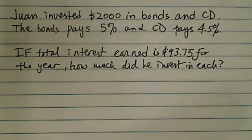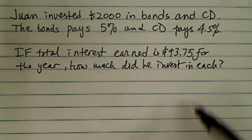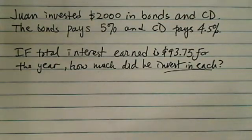Here's a word problem. This person invested $2,000 in bonds and CD all together. Since the bonds pays a little bit more than CD and the total interest was $93.75 for the whole year, we want to know how much invested in each type.